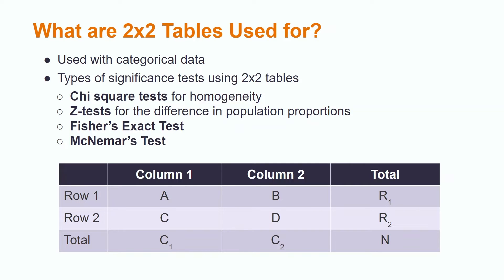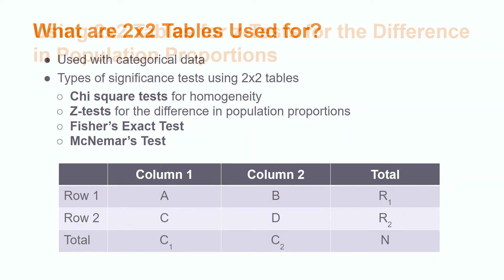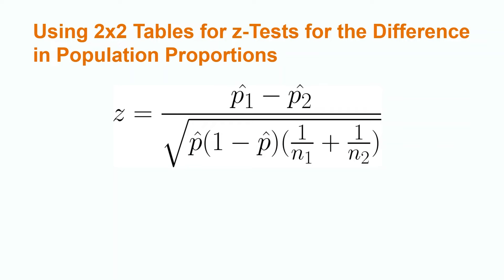An example of categorical data would be the count of people who voted for a certain candidate in a local election.